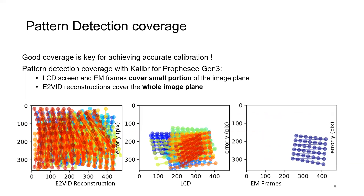Coverage of the detected patterns by caliber in the image plane of the Gen3 Atis event camera is shown here. In the case of e2vid reconstructions, the whole image plane is covered with the detected patterns, while this is not the case for the LCD and EM frames. Good coverage is key for achieving accurate calibration.